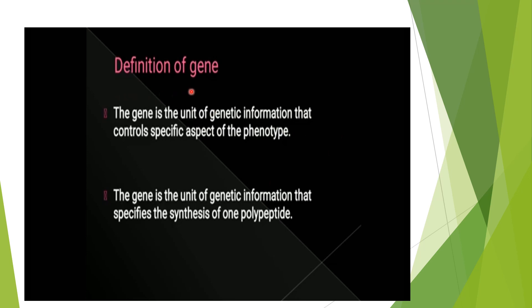First of all we will define what a gene is. The gene is the unit of genetic information that controls a specific aspect of phenotype. We can also define gene as the unit of genetic information that specifies the synthesis of one polypeptide. You can define gene in many different ways — it is also a part of DNA that contains the nucleotides for the synthesis of specific proteins.